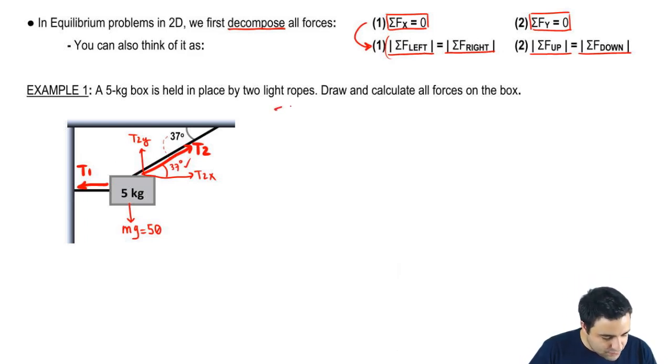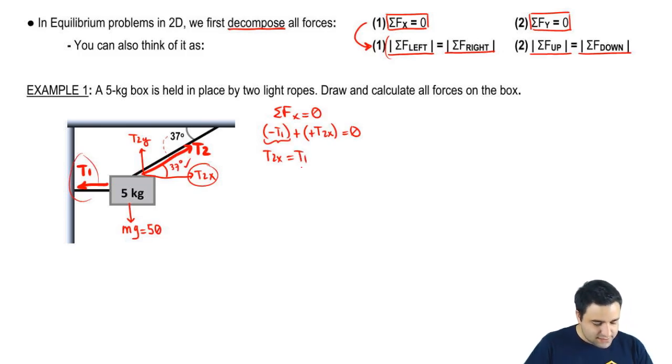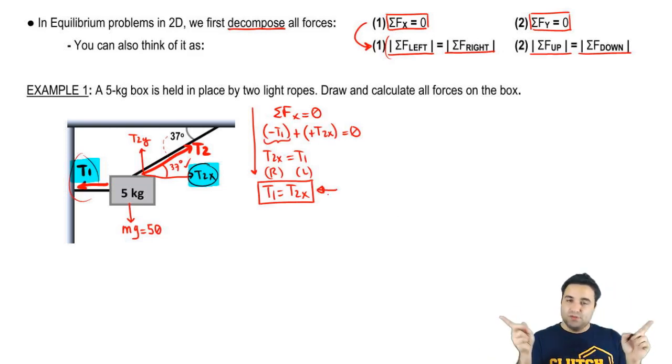I'm going to start here with the sum of all forces in the x-axis equals zero, and there are only two forces in the x-axis, T1 and T2x. You could say T1 is to the left, so I'm going to make it negative T1, plus T2x is to the right, so I'm going to get positive T2x equals zero, and then I'm going to move T1 to the other side of the equation so that it becomes positive, and then I get T2x equals T1. T2x is a force on the right, and T1 is a force on the left, so left equals right, and they're both positive, but instead of going through all of this, I could have just looked at the drawing here and said these two have to be the same because this is at equilibrium. Notice that they're both positive because the magnitudes are the same.